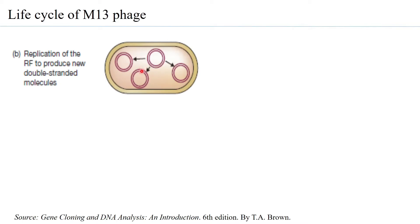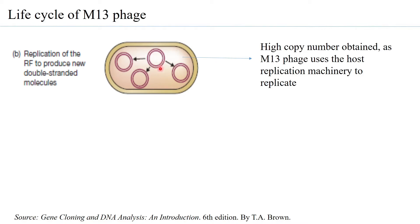Once you have the double-stranded DNA formed within the host bacteria, through rolling circle mechanism, you will find that there are multiple numbers of the double-stranded DNA form of M13 being formed. This enables formation of a very high copy number. You can imagine that if one cell has several copies and there are several bacteria having within them several copies of M13 DNA, the total sum of the M13 DNA will be quite high. Therefore, one doesn't really have to do much except growing the bacteria in the culture and allowing the M13 to multiply within the bacterial cells.